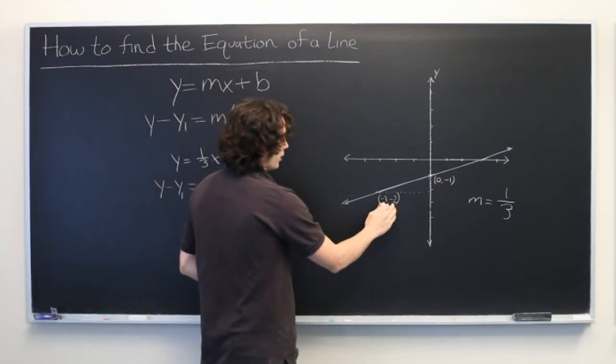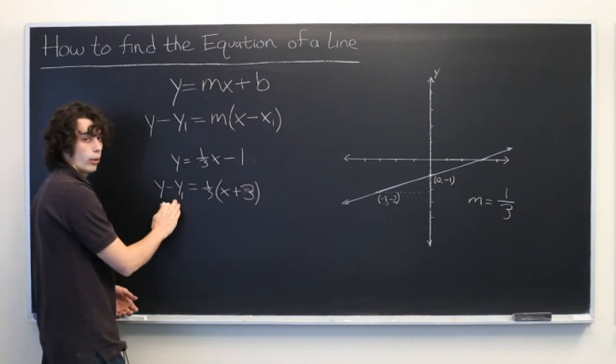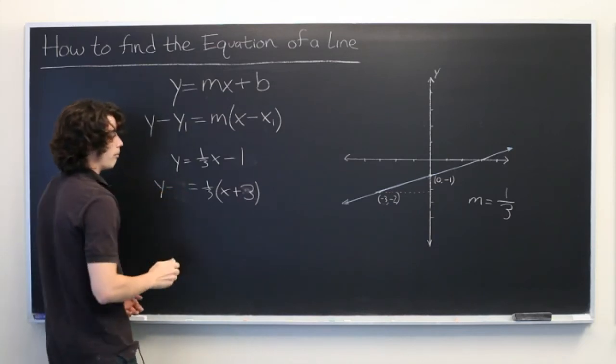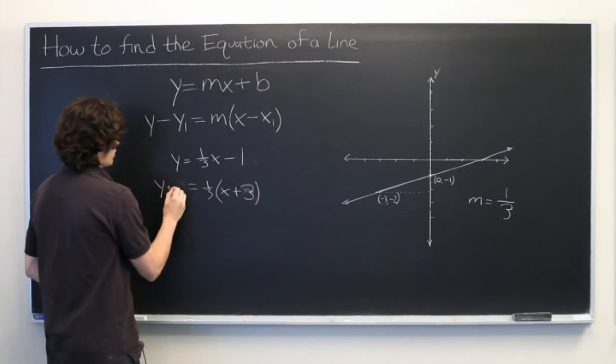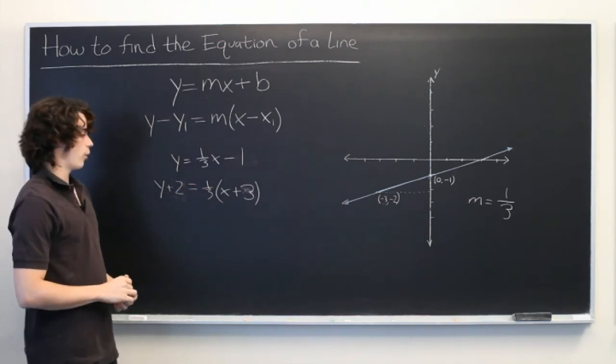Then we take our y-coordinate and plug it in for y1, where minus negative 2 is the same as plus 2. And there's our second equation.